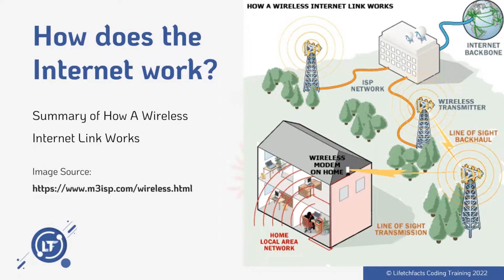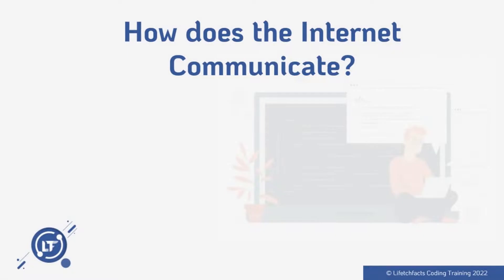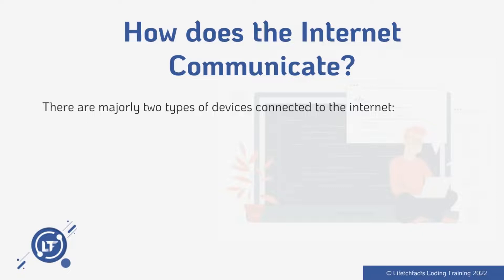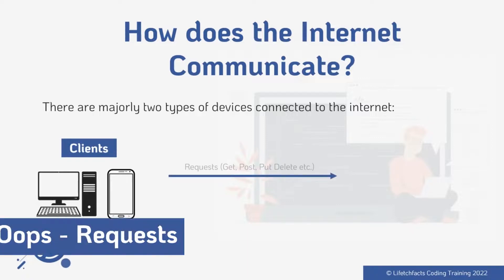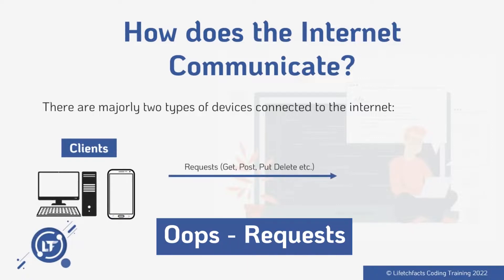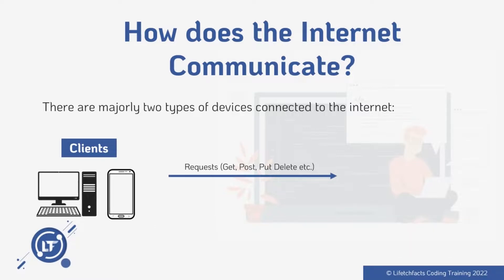So how does communication over the internet happen? There are two major types of devices connected to the internet. The first is the client, which sends a request — whether it's a GET, POST, PUT, DELETE request. If you don't get that, don't worry, we'll go into that later on.